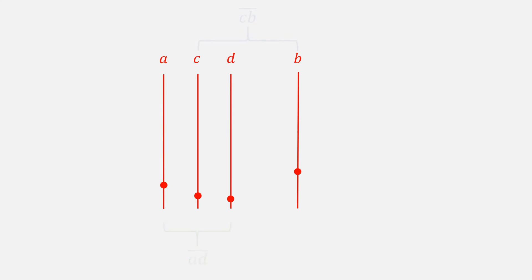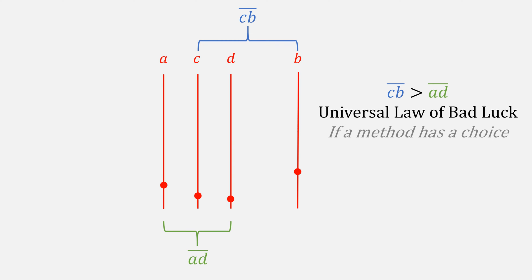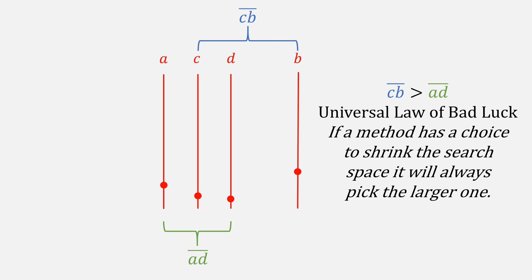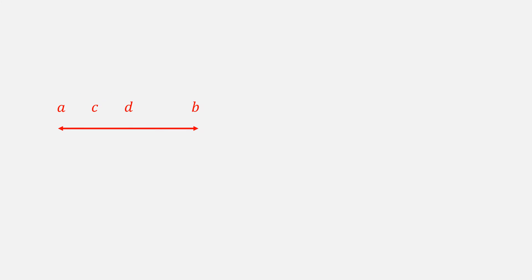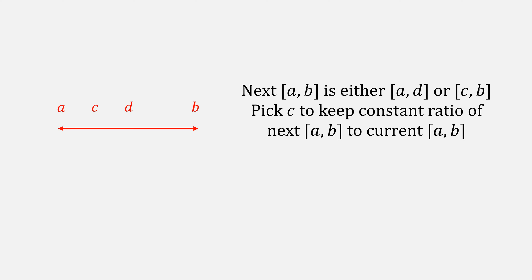The trouble is that these two intervals are not the same size, and from the universal law of bad luck, if a method has the choice to shrink the search space, it will always pick the larger one. In this example, F of C was greater than F of D. Eliminate the left side. Our next AB is going to be either AD or CB. Therefore, we want to pick C to keep a constant ratio of our next AB to our current AB.